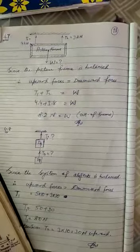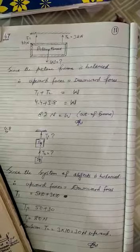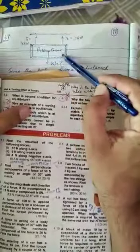Okay students, next numerical example number 4.7. You can see in your book the statement is given here: a picture frame is hanging by two vertical strings. So let's suppose we have this picture frame, and the picture frame is hung basically by two different strings.